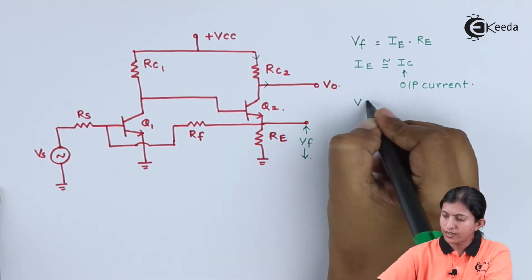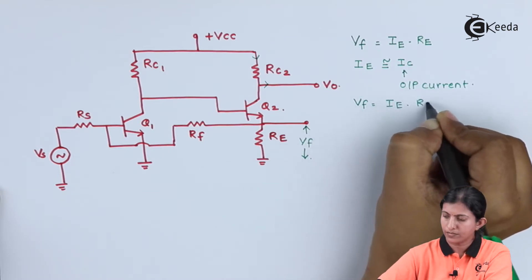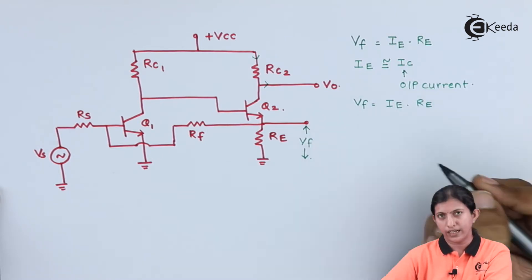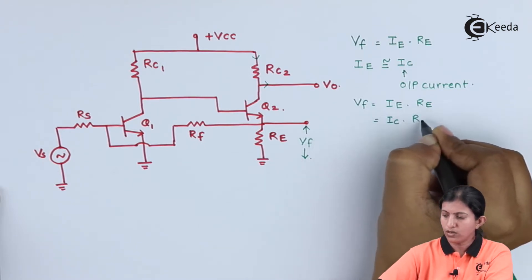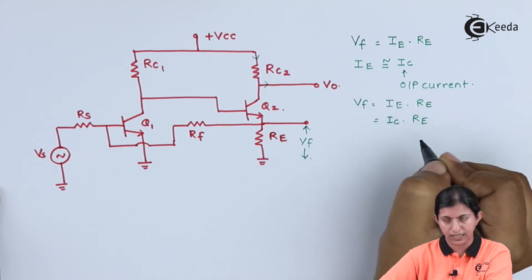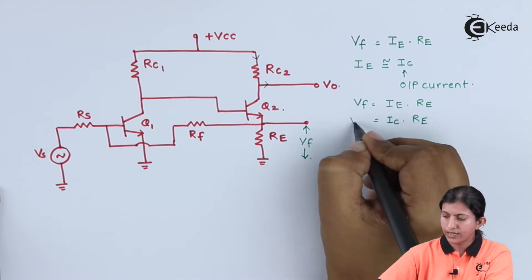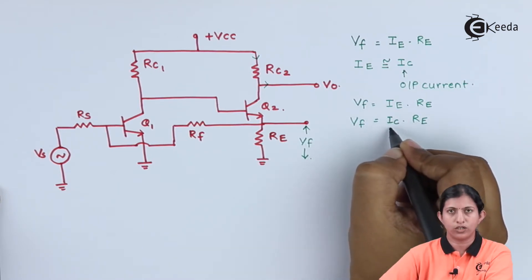Vf equals Ie times Re, which we can write as Ic times Re. Since we have written Ie as Ic, Vf, the feedback voltage, depends upon the output current.